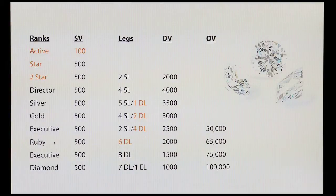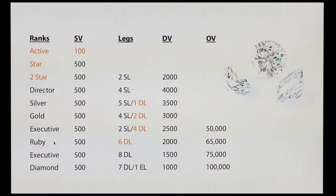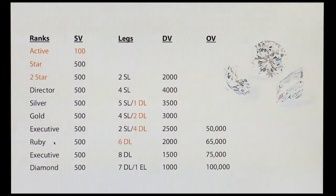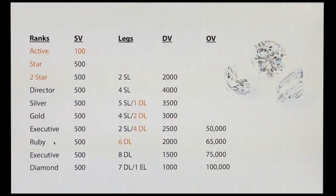The other changes involve silver, gold, executive, and ruby levels. As we evaluated our compensation plan, we noticed a span of time people take to get from director to silver. From two-star to director, you just need two more star legs and $2,000 of volume. But going from director to silver in our current plan requires two more legs and two directors in addition. That time to get those two directors pushes rank advancement further than we'd like. So in the new plan, silver directors qualify with one director leg instead of two, golds with two instead of four, executives with four instead of six, and rubies with six instead of seven.